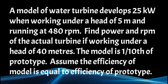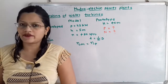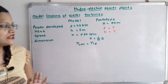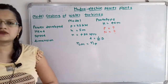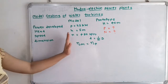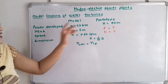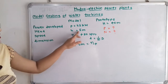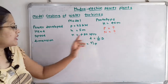So this was the given question. Let us first list the given data. Testing is carried out on the model, so we will use notations with small letters for model and capital letters for prototype. Power developed for model: small p = 25 kilowatt. Head for model: small h = 5 meter. Speed: small n = 480 RPM.